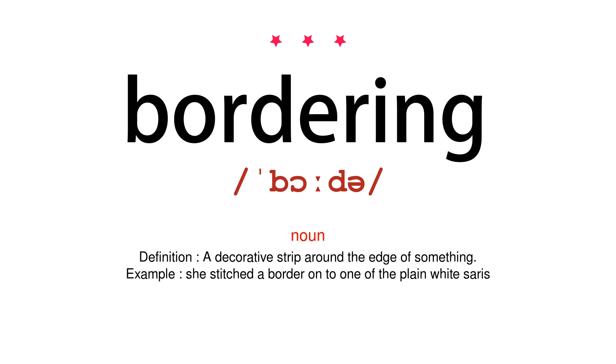Noun. Definition: a decorative strip around the edge of something. Example: she stitched a border onto one of the plain white saris.